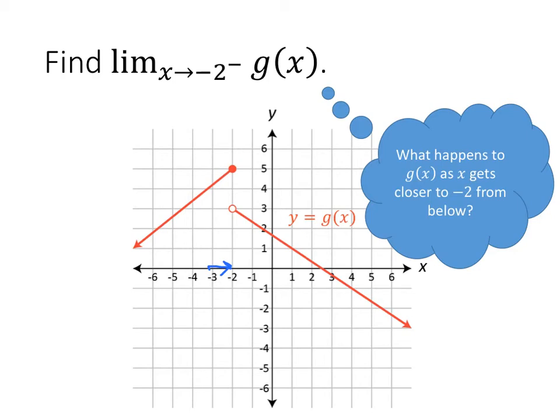We're thinking about the corresponding y-values for those x-values. The corresponding y-values are up here, and as we can see, those y-values are getting closer to positive 5. So this limit equals positive 5. For limits, it doesn't matter which circle is filled in and which is open — what matters is which direction you're coming from.